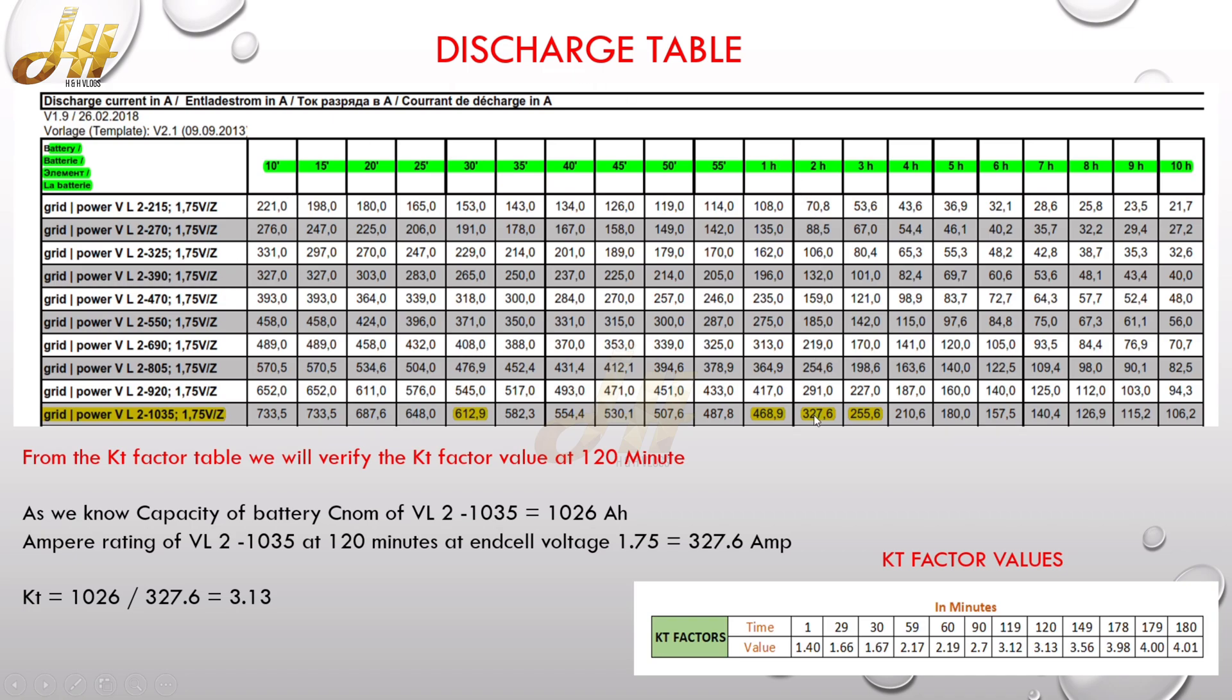So we need to divide the normal capacity, which is 1026, by 327.6, so you can get the KT factor value as 3.13. So this is the procedure how the KT factor value can be achieved or how it can be derived.